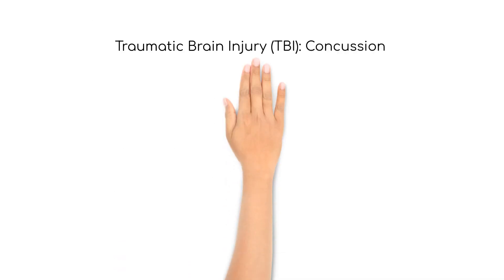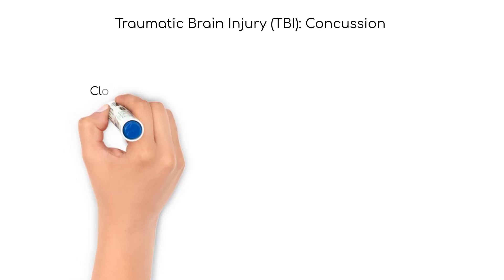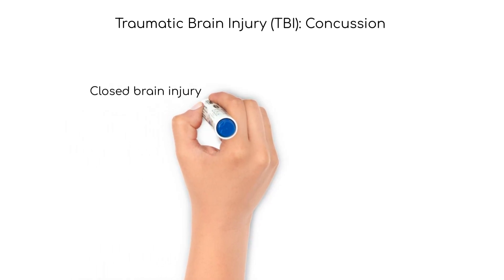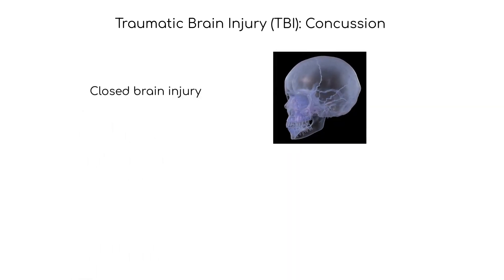A traumatic injury to the brain is called a concussion or TBI. Two types of traumatic brain injury include closed brain injury and penetrating brain injury. There is no break in the bones of the skull in a closed brain injury.